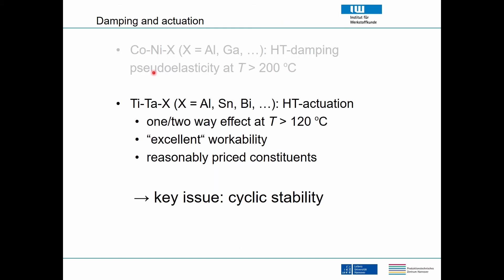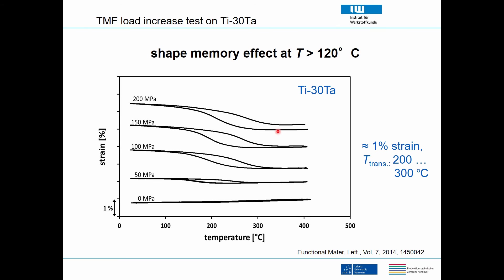What we looked into were cobalt-nickel based materials and titanium-tantalum based materials — I will only talk about the latter here. These alloys are intended for high temperature actuation, they feature one- and two-way shape memory effects, they have pretty good workability because they are titanium-based, and all constituents are reasonably priced. For the applications in mind, the key issue is cyclic stability.